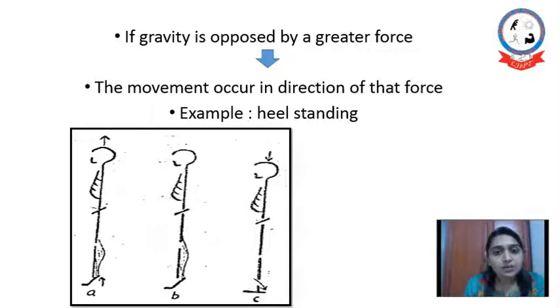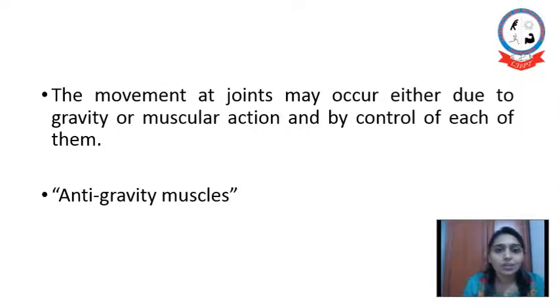So the muscles which help us to stand against gravity and working isometrically are known as anti-gravity muscles. And the movement at joint may occur either due to gravity or muscular action or by control of each of them. As I said that if movement is occurring towards gravity that means that can be because of gravity. If it is against gravity that is upward movement the pure muscular action required. And if the movement is occurring towards gravity but in a controlled manner then there will be effect of gravity as well as gradual relaxation of the muscle.